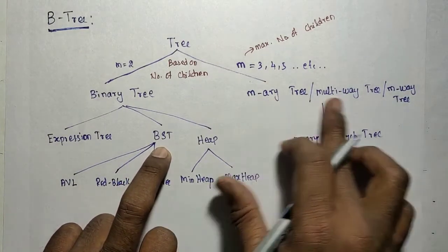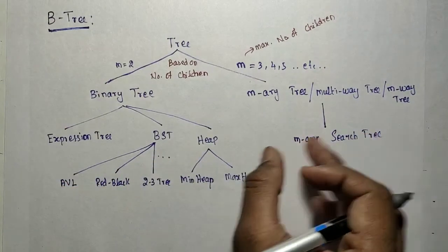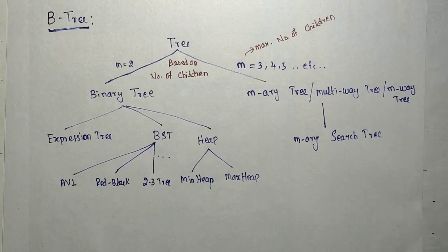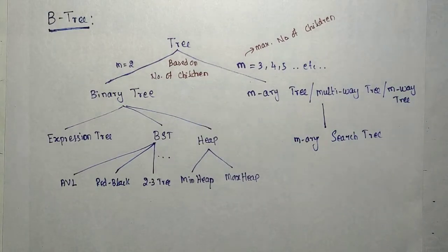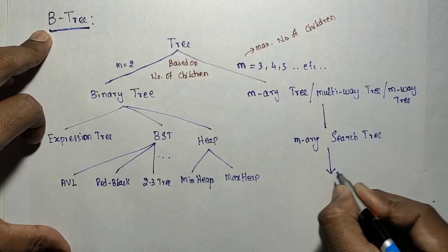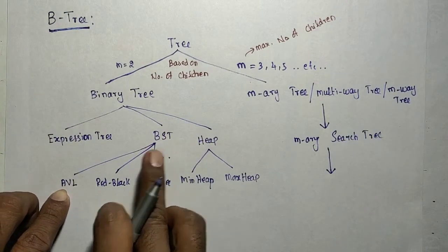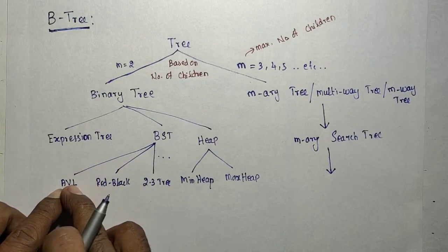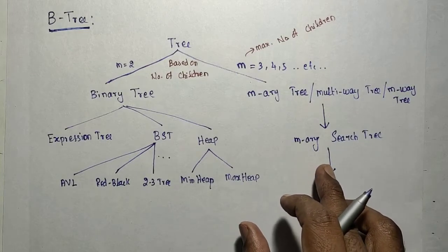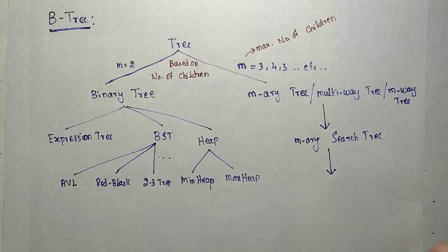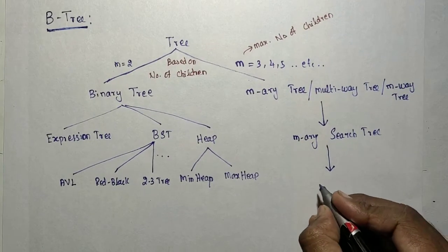The m-way search tree stores values in sorted order following BST property: left subtree values less than root, right subtree values greater than root. If we then apply balancing rules — similar to how AVL tree requires the balance factor to be at most one — we can derive the B-tree by applying height constraints on left and right subtrees.